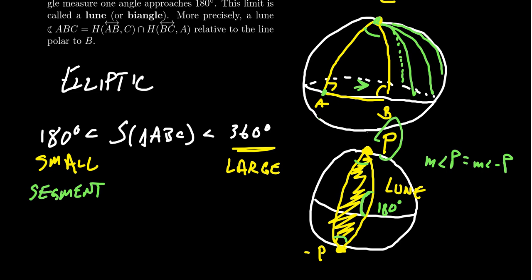So the angle sum of a lune is going to be 180 degrees plus two times the measure of angle P. If you allow the angle P to go off towards a right angle, so basically you take off a whole octant of our sphere, if you allow a right angle, then this would be something that actually obtains an angle sum of exactly 360 degrees.